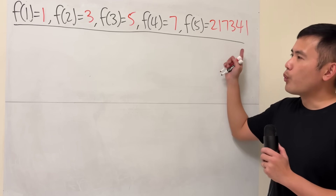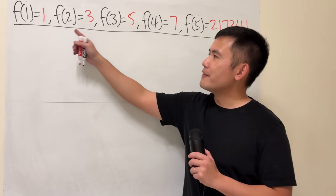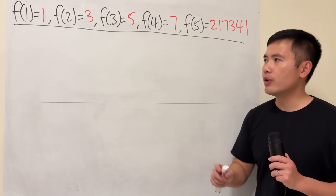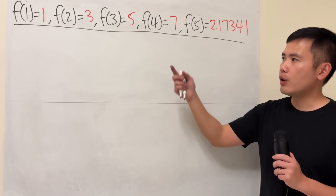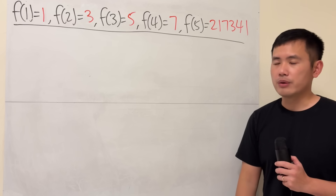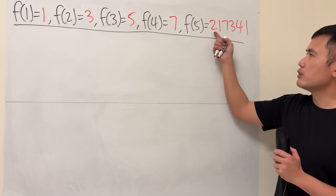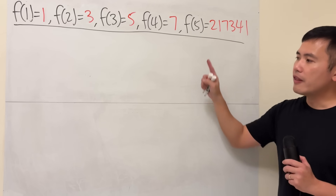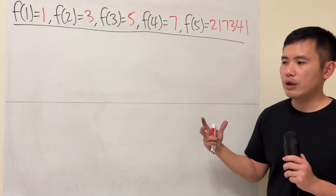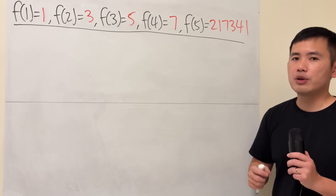Here's the math. Whenever we have 5 values, we can find a 4th degree polynomial that satisfies all these conditions. It's unique as well. And in fact, it doesn't matter what the last number that you pick right here — the following will always work.